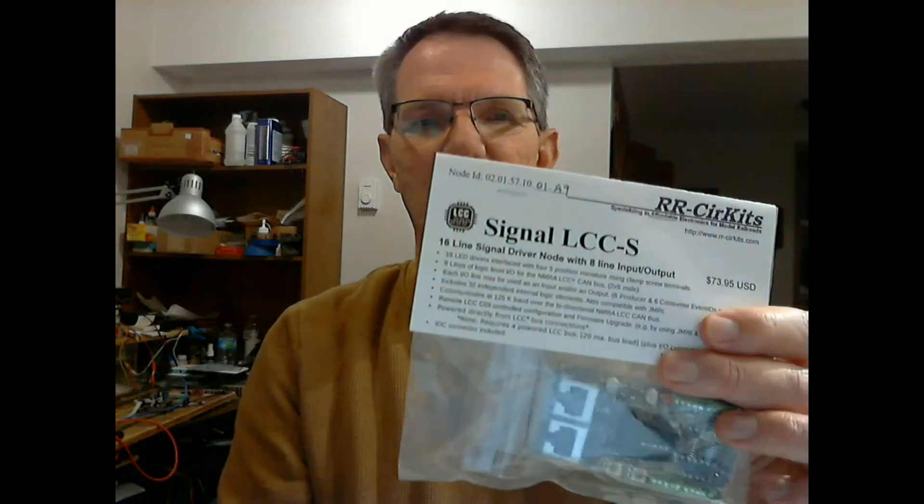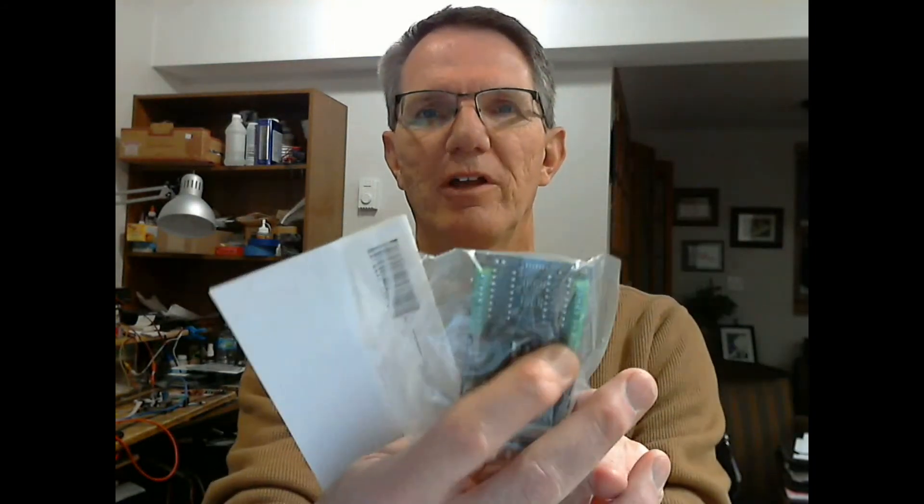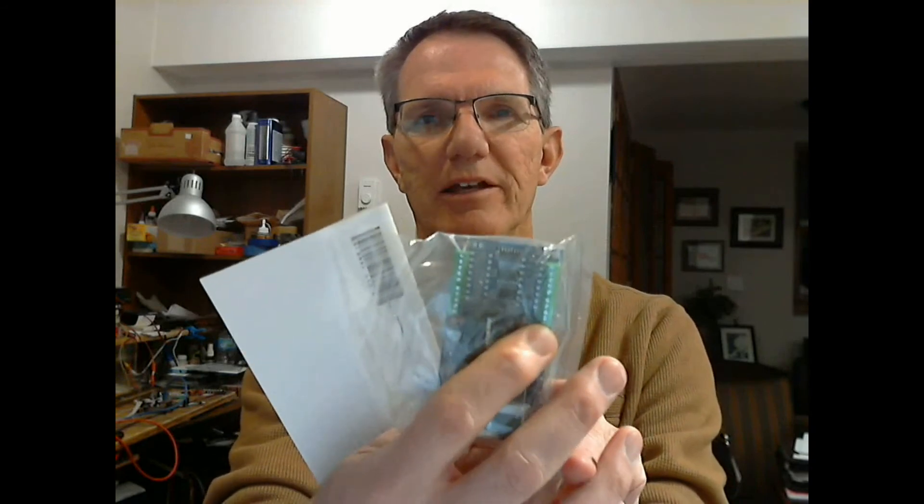Now we're going to also point out there's two kinds of signal LCCs. There's a signal LCC P, which is P for pins. And that's what this one is. It has little pinouts for the connector for the signal.